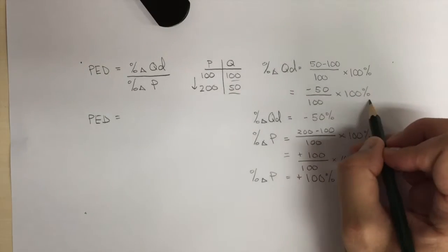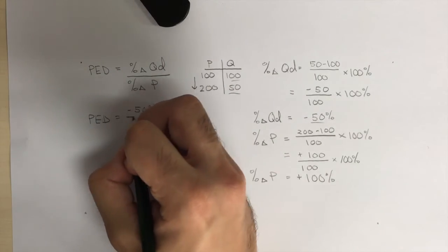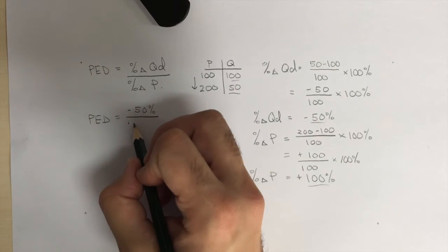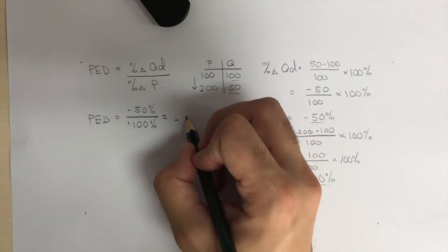Now let's calculate PED using this information. We'll take that minus 50% change in quantity demanded, divided by that positive 100% change in price, and that will give us minus 0.5.